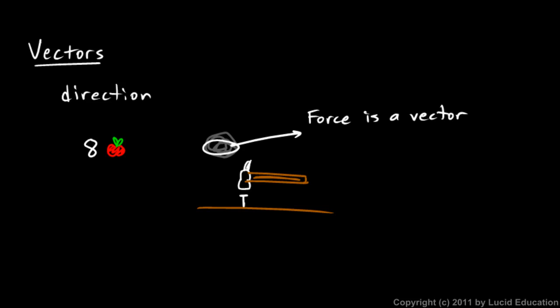Some things don't have a direction, and it makes no sense to talk about the direction in some cases. Like if you talk about the temperature outside today, and you say it's 83 degrees outside. It doesn't make any sense to say that it's 83 degrees up. That doesn't mean anything. Nobody ever says that.